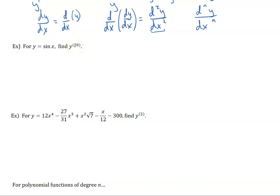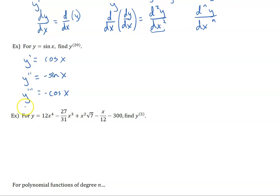I don't want to take this derivative 20 times, but what I can do is take the derivative a few times and then find a pattern. So y prime is equal to cosine x. The second derivative, y double prime, is equal to negative sine x. The third derivative is equal to negative cosine x. And then the fourth derivative is positive sine x. We notice that the zeroth derivative of sine and the fourth derivative of sine are the same thing.